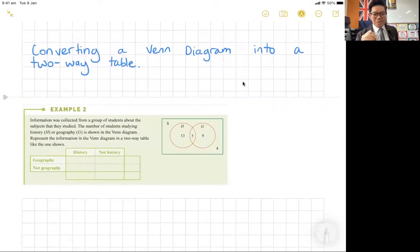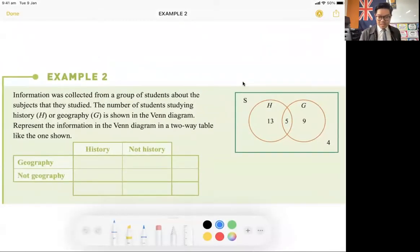So today we're going to talk about how to convert a Venn diagram into a two-way table. We've looked at Venn diagrams before, but one thing that we haven't quite looked at is we can actually translate a Venn diagram into a two-way table. I'm going to look at this example here and zoom into it so you guys can see it, and I'm just going to write straight on here.